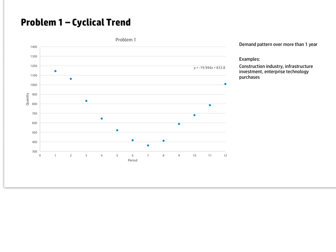Here's problem one of the practice exam for forecasting. This one is a cyclical trend — a pattern that shows up over multiple years. If we consider each of these to be quarters, we have three years of data here, and the pattern goes down and then starts to come back up again.